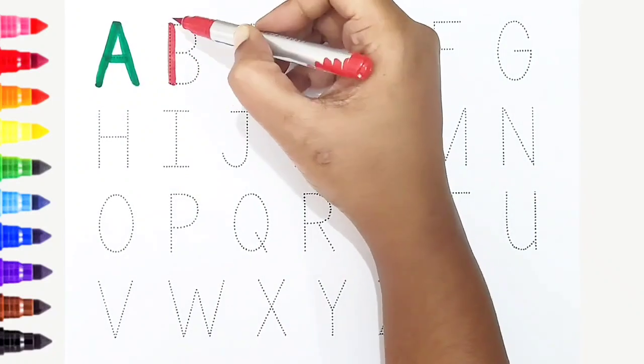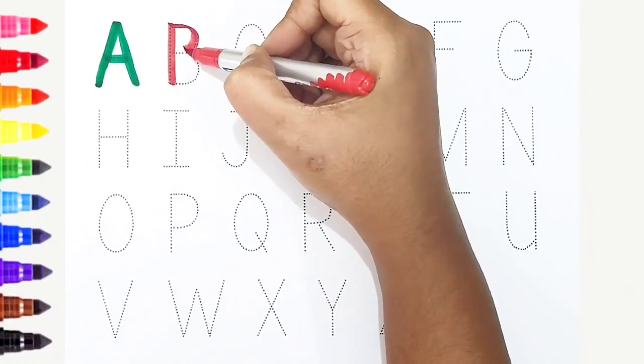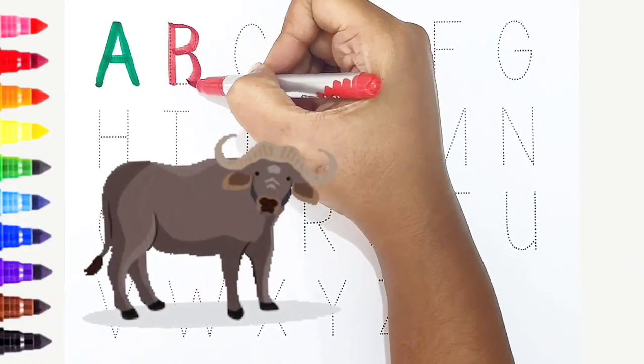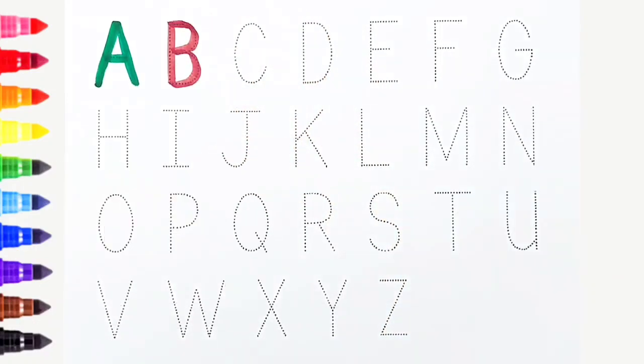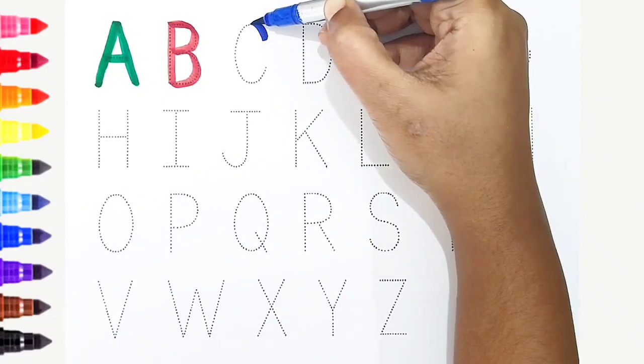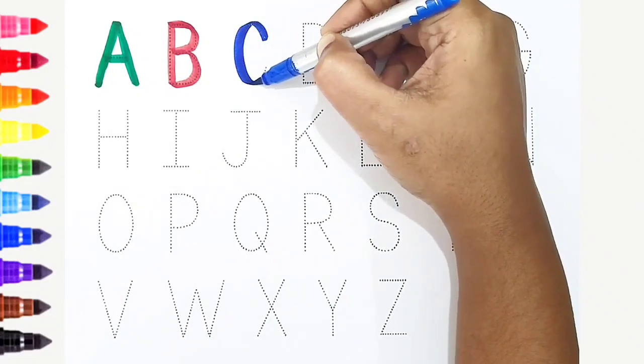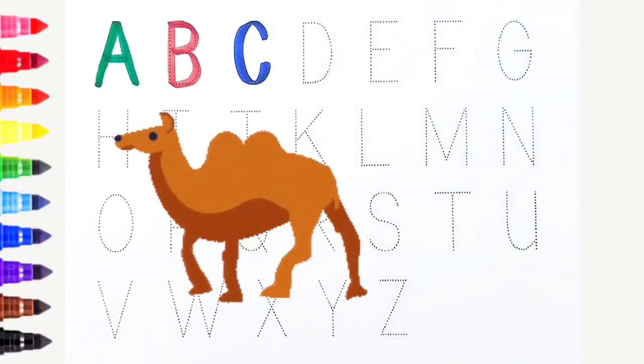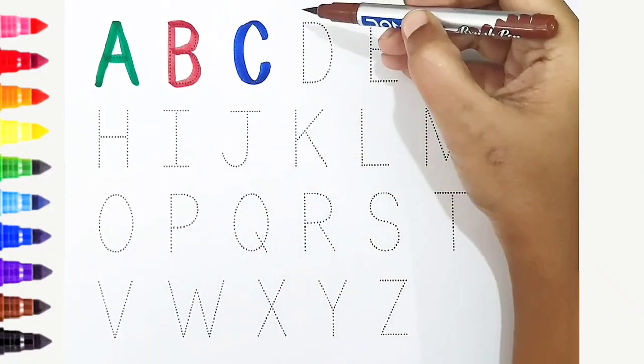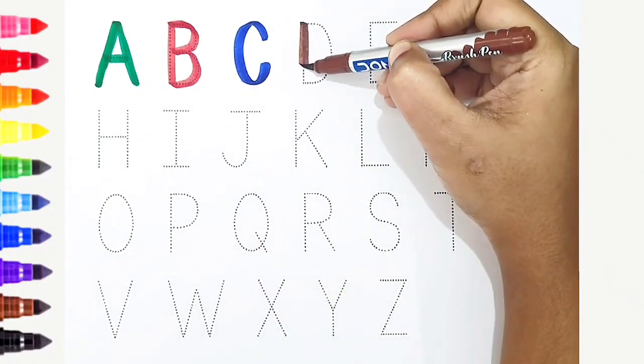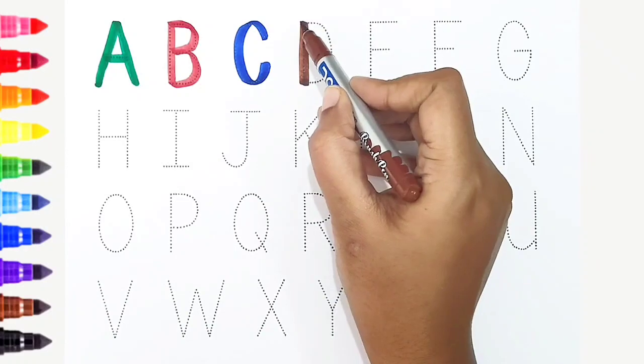C, dark blue color, C is for camel. D, brown color, D is for donkey.